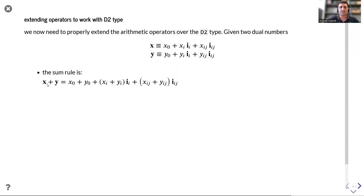So, the sum of two d2 numbers is another d2 number whose real part is equal to the sum of the real part. The gradient is the sum of the gradient and the hessian is the sum of the hessian.